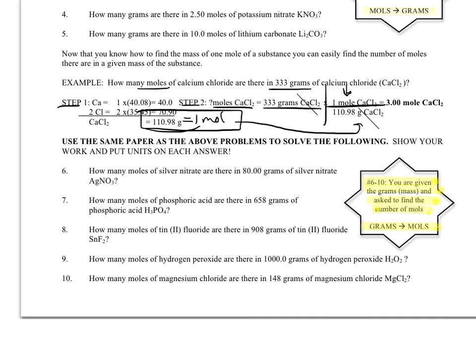So I end up here, instead of with multiplication, a division problem. 333 divided by 110.98, and that gives me my final answer of 3 moles of calcium chloride. So when you do problems 6 through 10, the next time you're in class, you are going to follow this final example. And that is moles worksheet number 2.